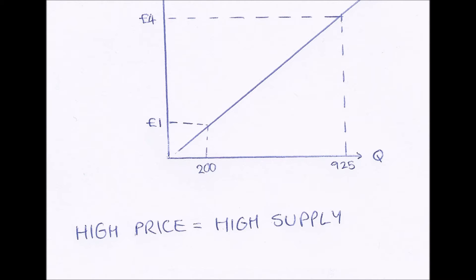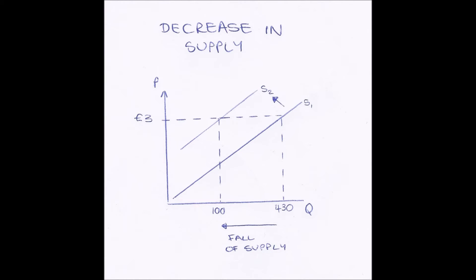This is shown on the curve: if the price is four pounds — which is high — we read across to our supply curve and then down, and our quantity supplied is 925 units, which is quite high. However, if our price is low, there is a low profit margin, so businesses will either exit the market or no new businesses will enter it. Therefore there are fewer businesses producing the goods and there is a low supply — shown where the price is one pound and the quantity supplied is only 200 units.